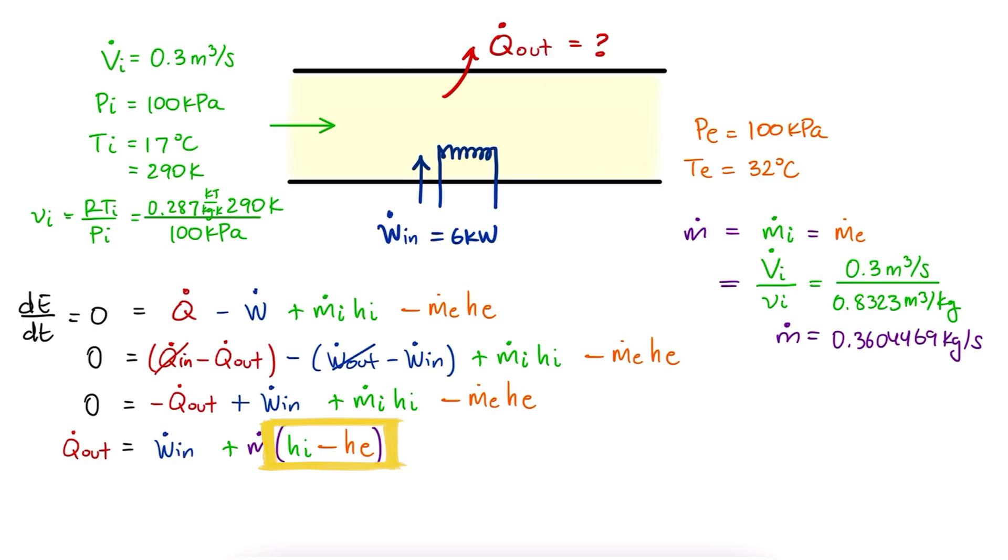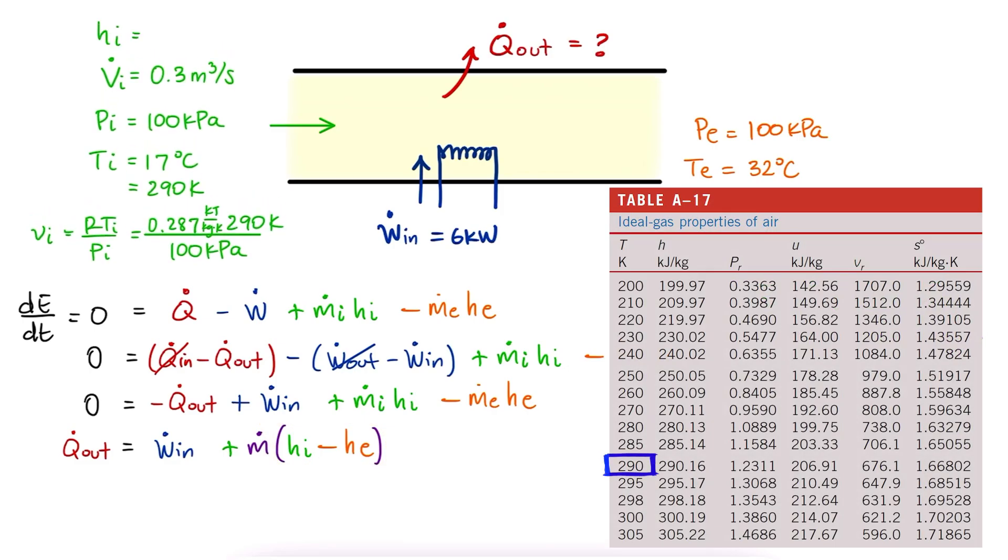As for the enthalpies, we can just look up air at 290 Kelvin for the inlet and write down the specific enthalpy value.